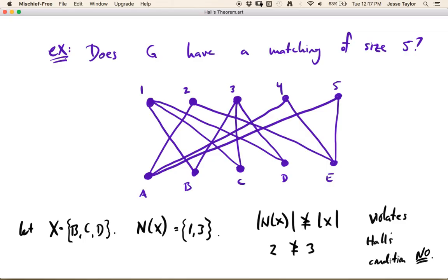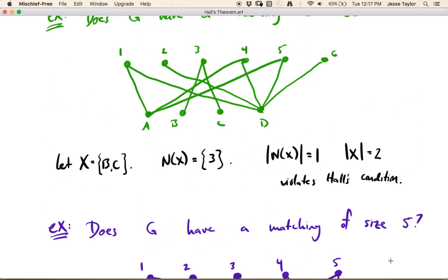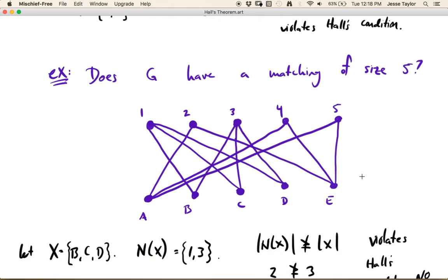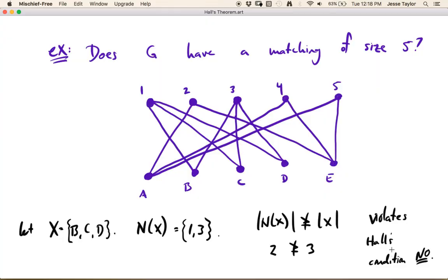So then the answer is no, right? Just like up here, the answer is no. This graph does not have a matching of size 4 because it violates Hall's condition. This graph doesn't have a matching of size 5 because it violates Hall's condition. So this is how it works. It's essentially saying, are there enough relationships here in this set such that everything can get matched? Well, if these three things aren't related to at least three things, then there's no way they're going to get matched up. And that's what Hall's condition says.